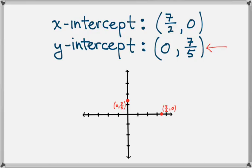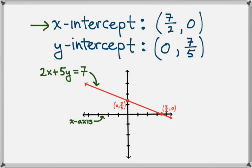Now when we connect these two points via a line, that's precisely the line that comes from the equation 2x plus 5y equals 7. And we'll talk more about graphing lines in the next section. But the idea here is that the x intercept is the place where this line intersects the x axis. And the y intercept is just the place where this line intersects the y axis.